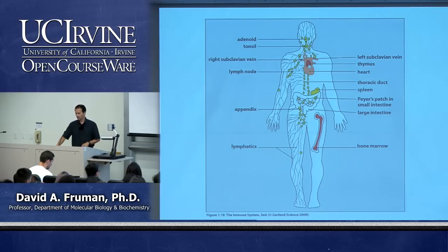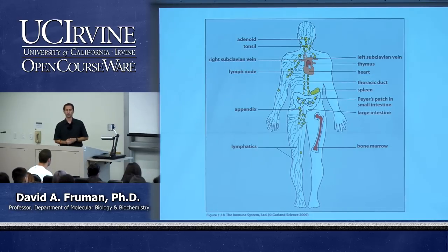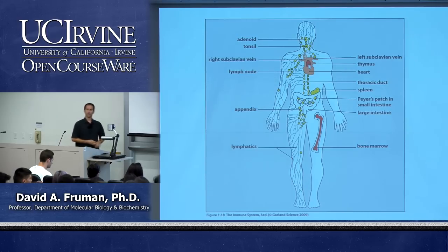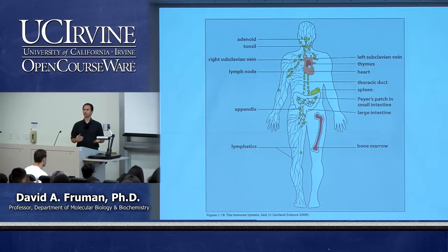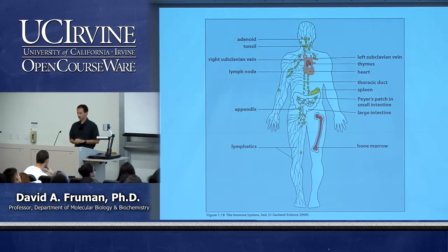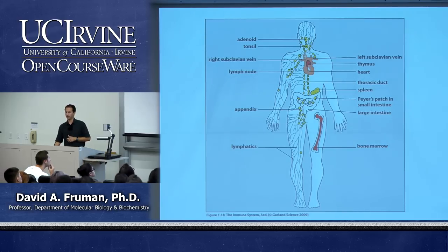Active learning break: discuss with a neighbor — what would cause worse immunodeficiency, removing all the bone marrow or removing the thymus, and why?